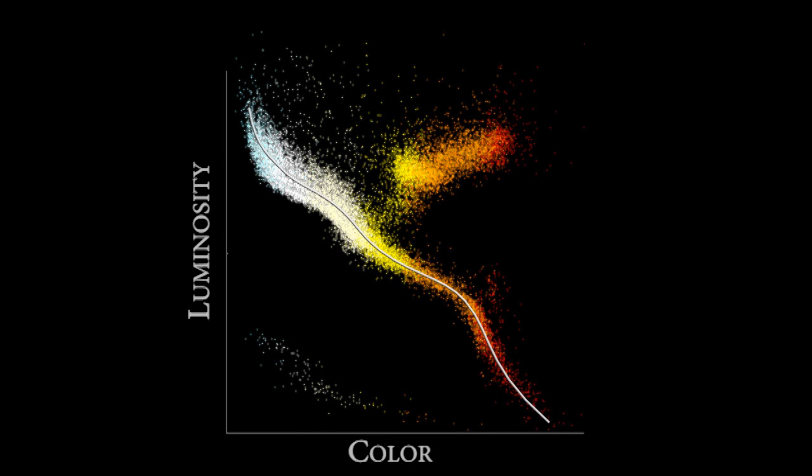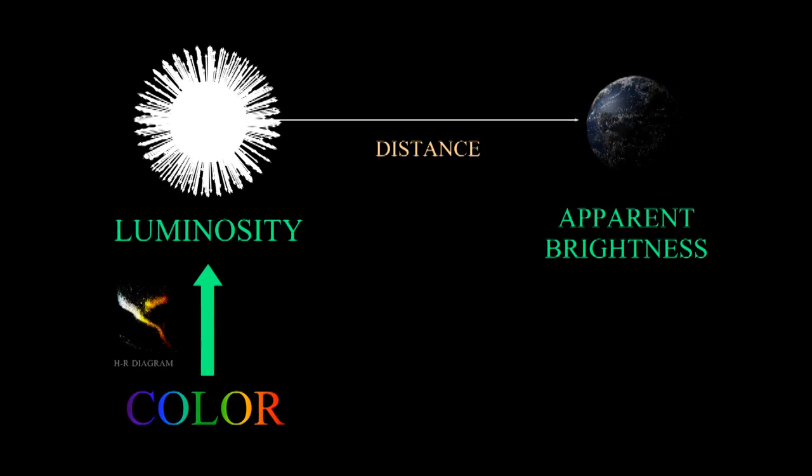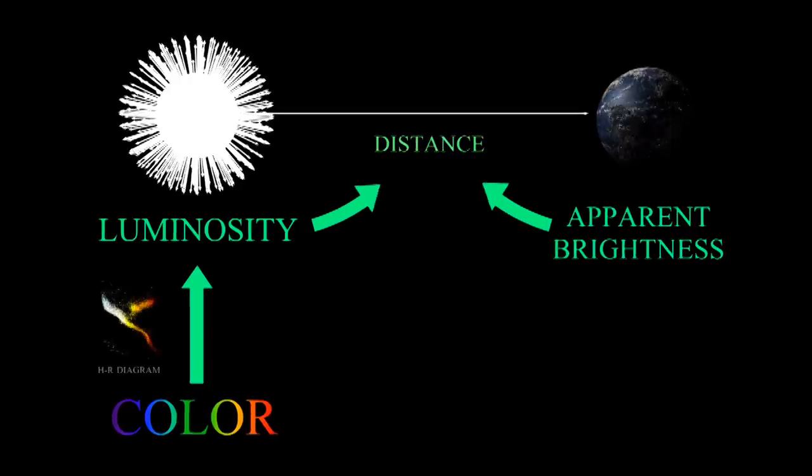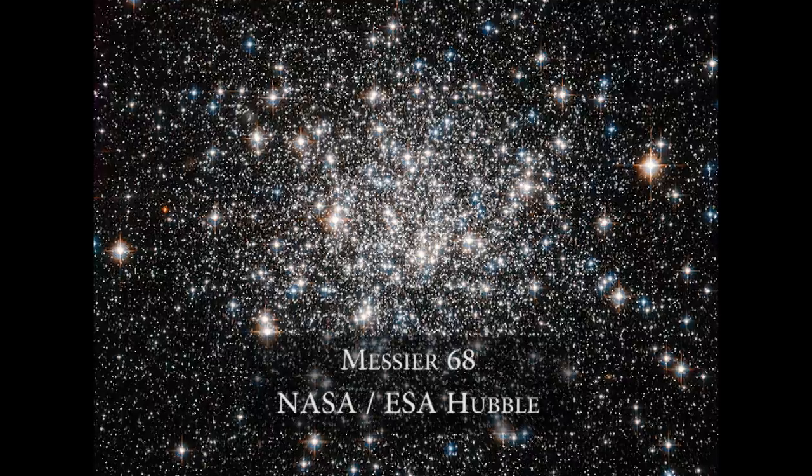This chart is important because we can use the color of a star to predict its luminosity. By comparing the predicted luminosity against the apparent brightness, we can estimate the distance to the star.